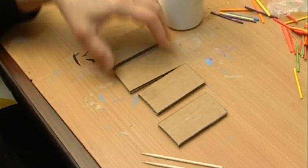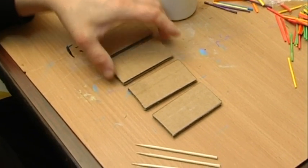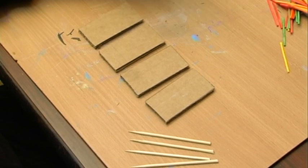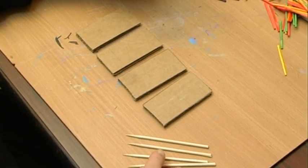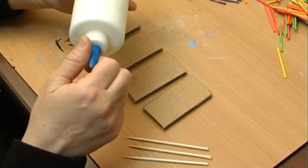Now that our strips of the corrugated box have been cut and so have our sticks, we're going to insert the sticks into the corrugated box and glue them securely in place.